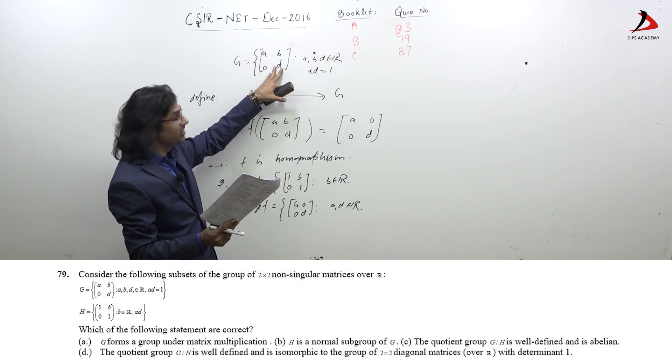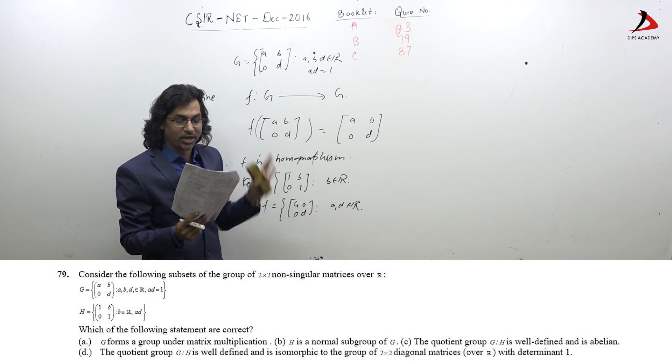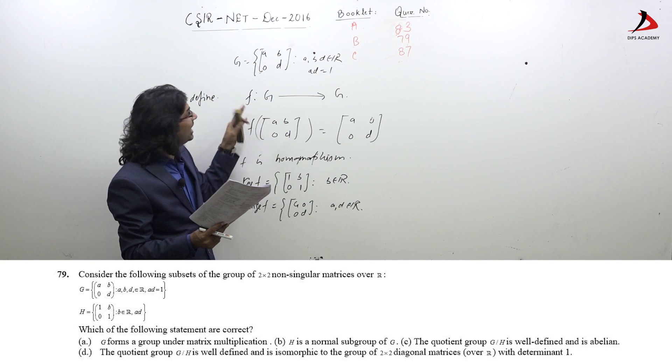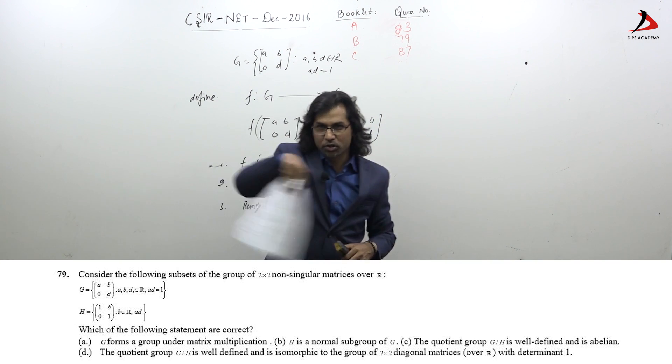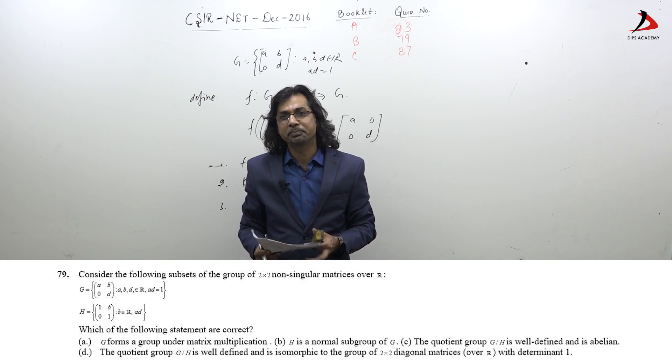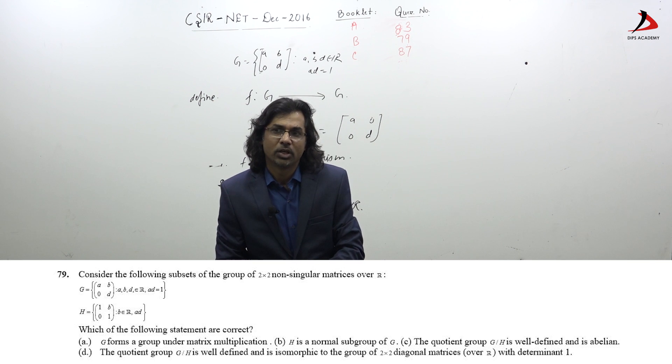They have given this structure: the collection of all such matrices, upper triangular, ABCD real, ABD real, and it is one. You can see the question; it is displayed on your screen as well.